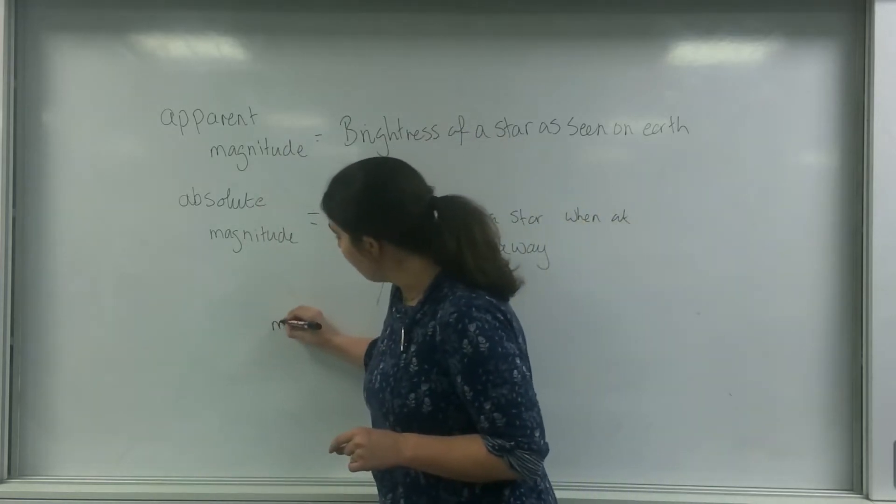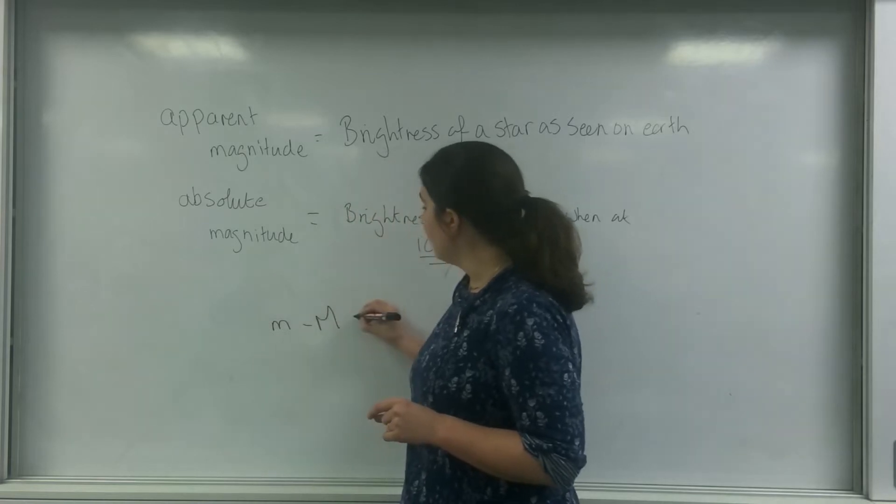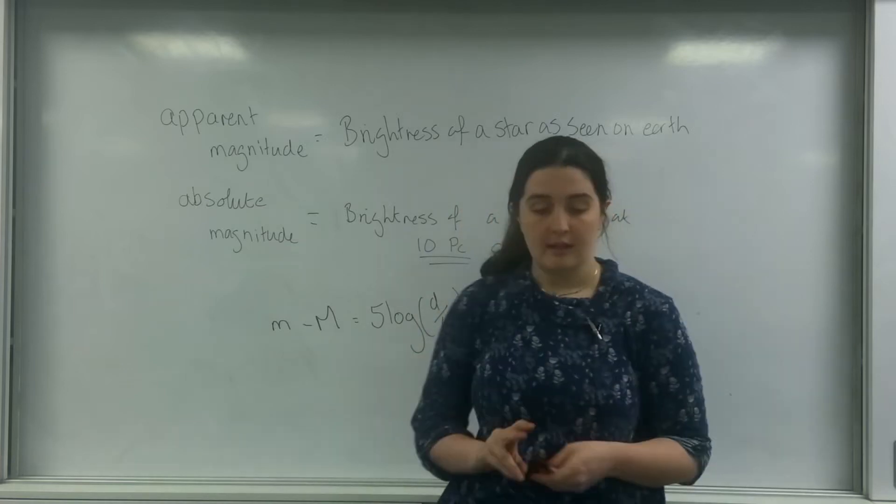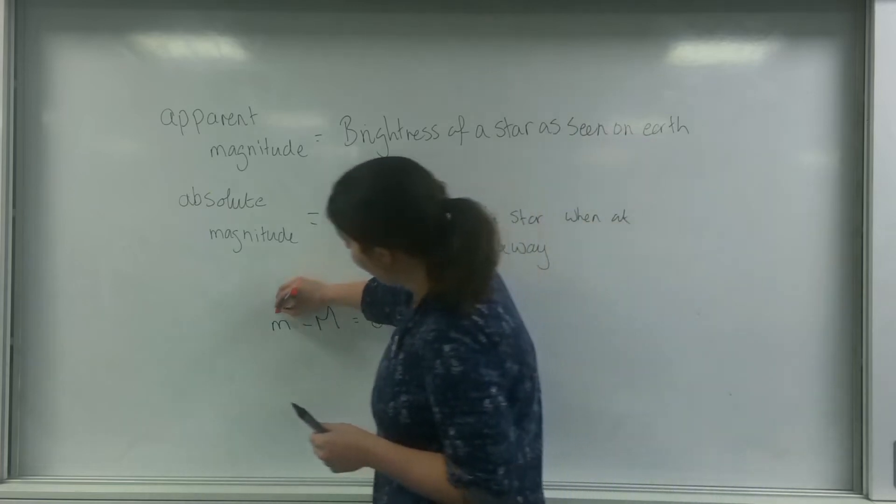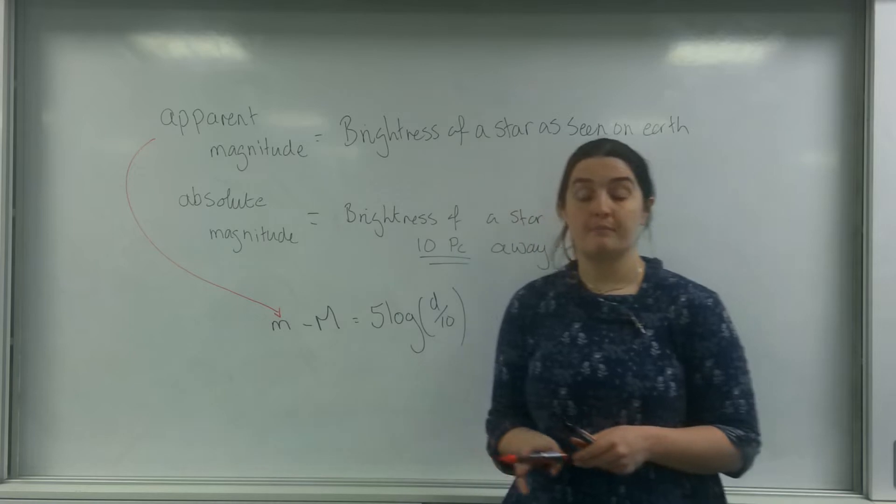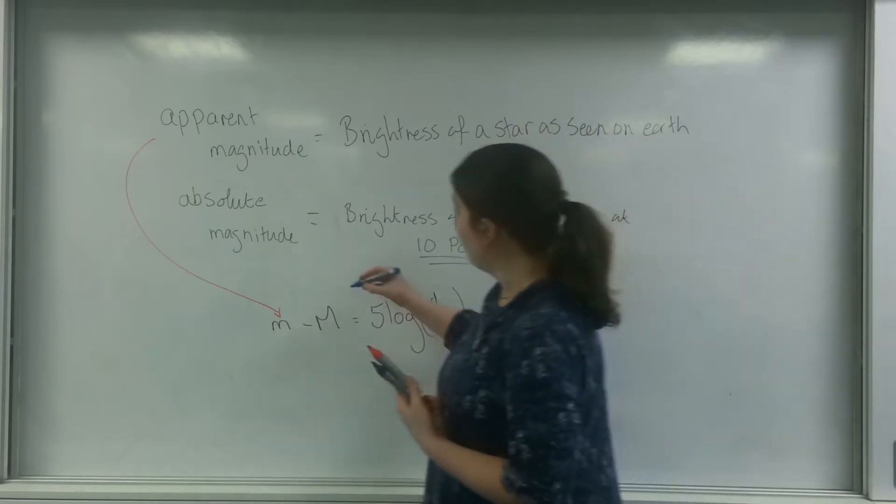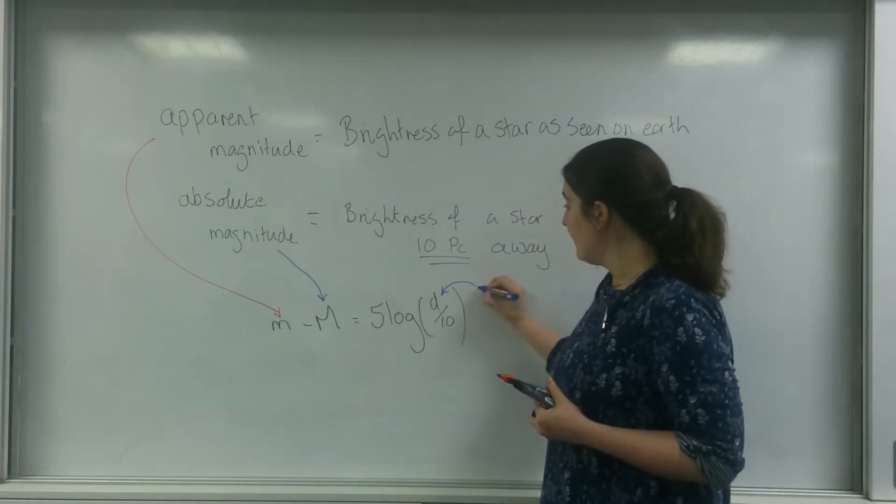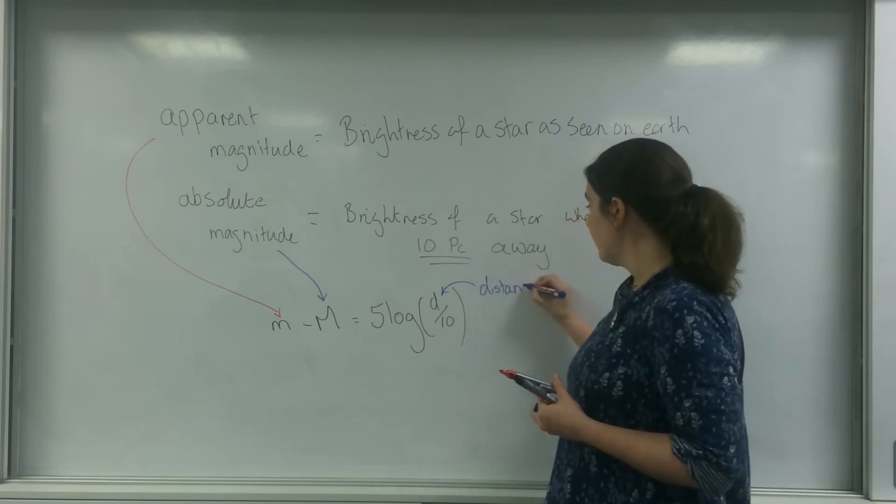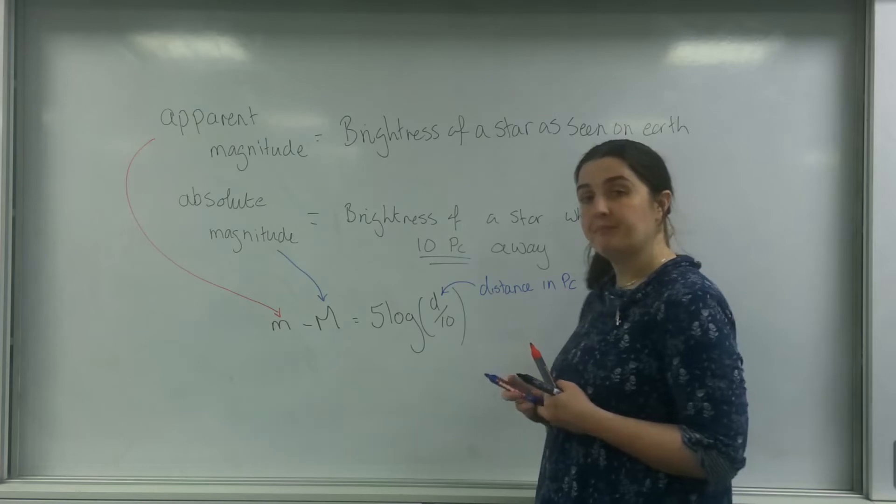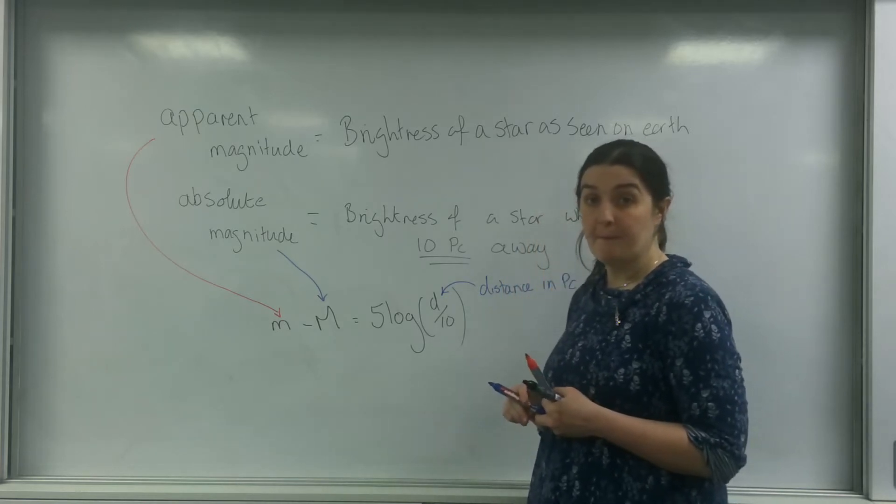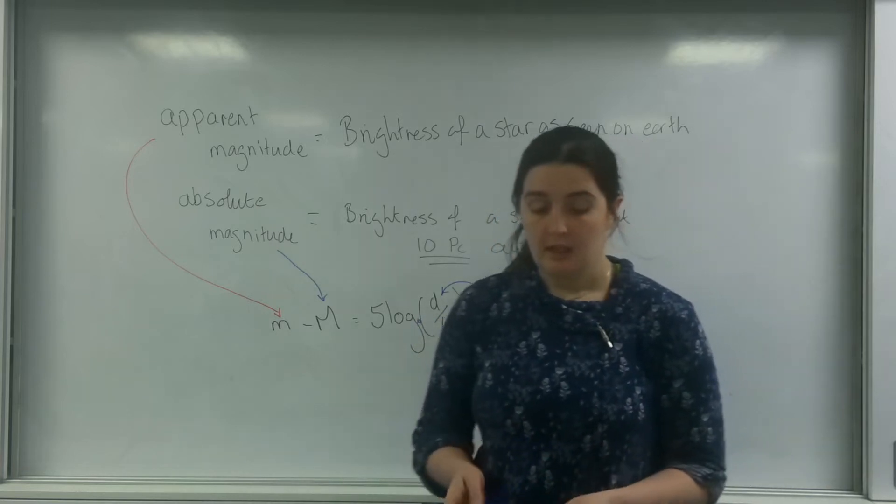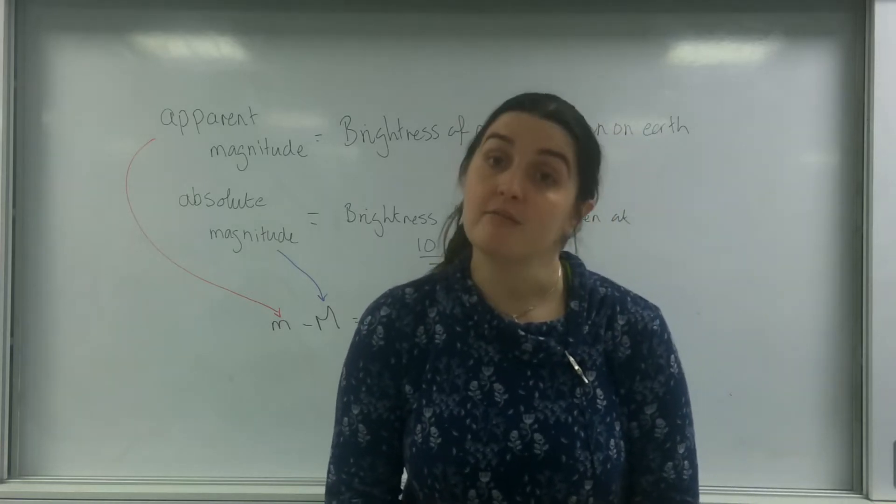And the formula is little m minus big M equals 5 log D over 10. This little m is the apparent magnitude. This big M is the absolute magnitude. This D is the distance in parsecs, so this is the actual distance it is. This log is to the base 10. So what I'm going to do now is I'm going to do a couple of examples of using this formula and rearranging with it.